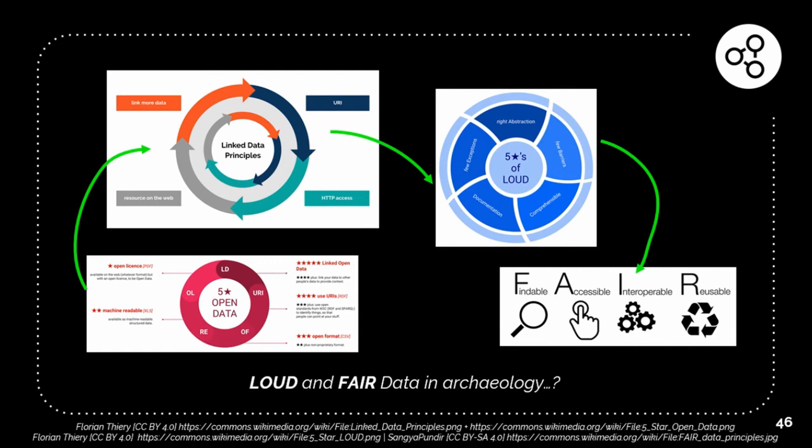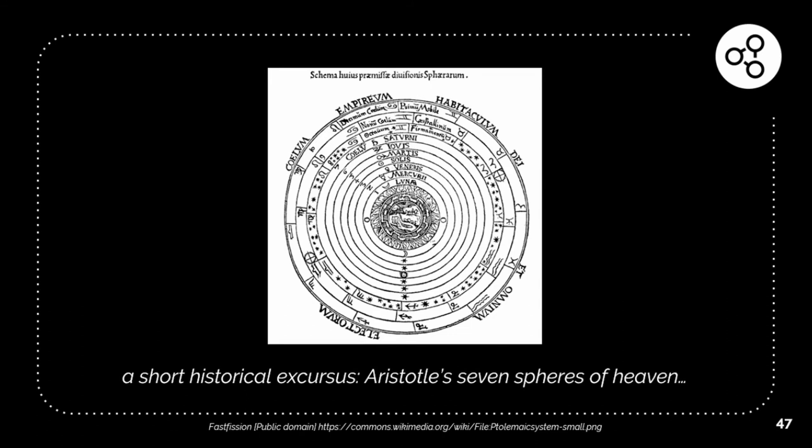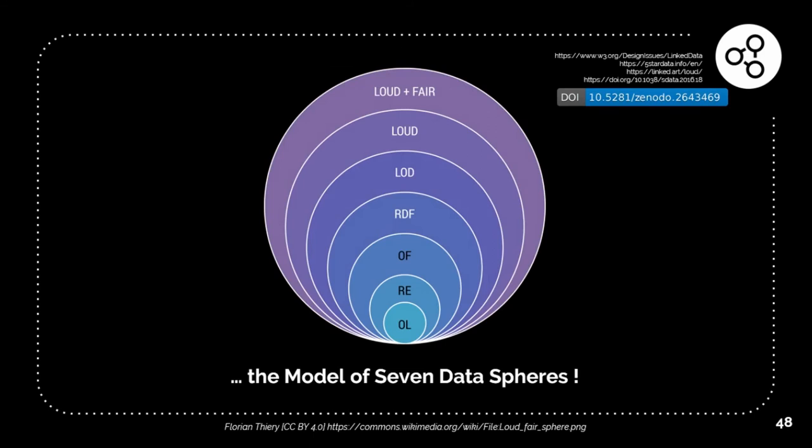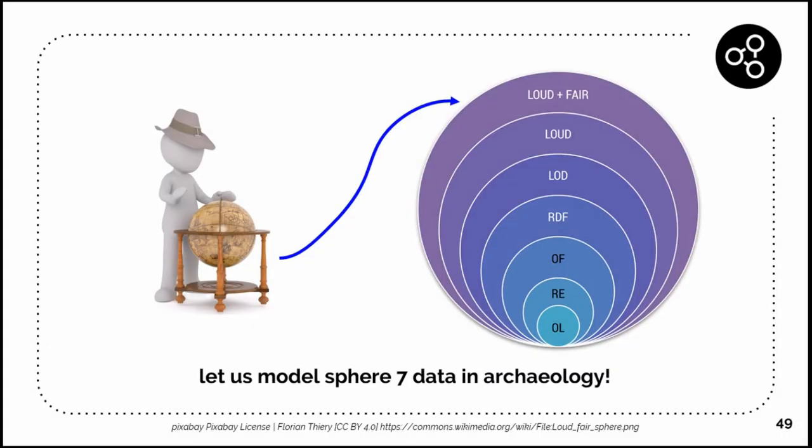Just a short historical excursus: have a look on the image. Aristotle had some kind of idea of seven spheres in heaven, so maybe we could try to invent a model of seven data spheres, beginning from the five-star data, on top of that LOUD data, and at the really top LOUD and FAIR data. So let us model this seven-sphere data in archaeology and also in our ARS3D project.